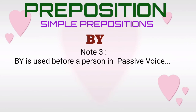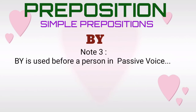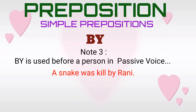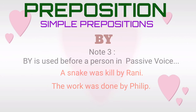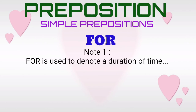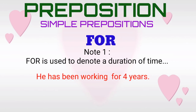Note three. The simple preposition 'by' is used before a person in passive voice. For example: 'A snake was killed by Rani.' 'The work was done by Philip.' Simple preposition 'for', note one. The simple preposition 'for' is used to denote a duration of time. For example: 'He has been working for four years.' Here the simple preposition 'for' is used to denote a duration of time.